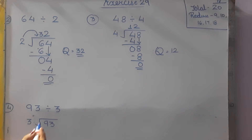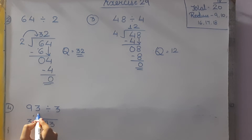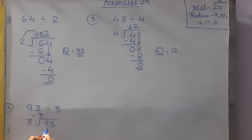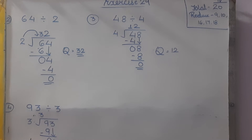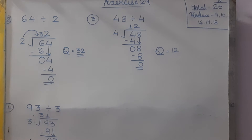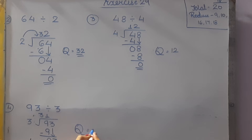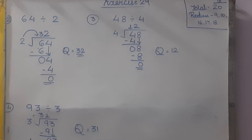93 divided by 3. 3 threes are 9, so 9 minus 9 is 0. Bring down 3. 3 ones are 3, and 3 minus 3 is 0. So the quotient is 31. Children, mark questions 5, 6, and 7 as homework — they are the same as these questions.